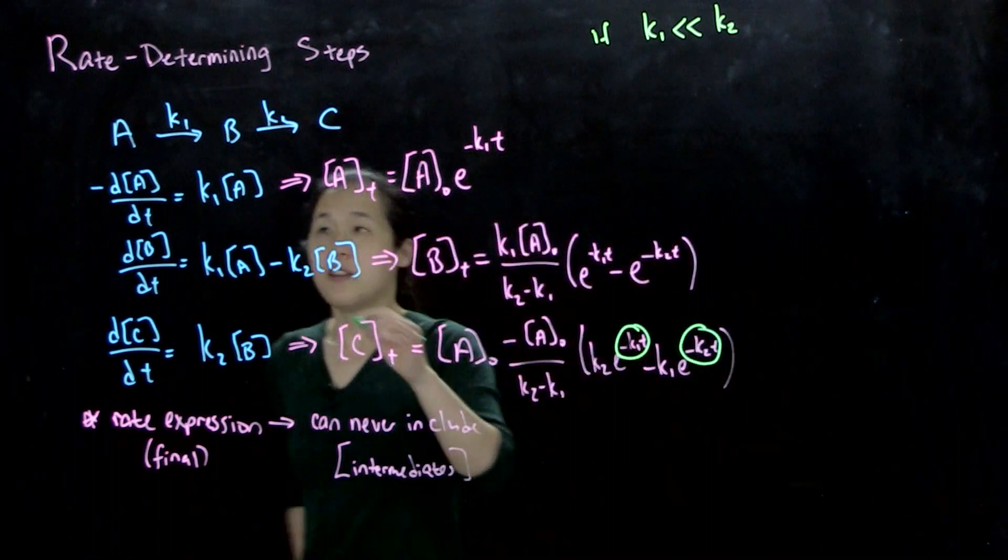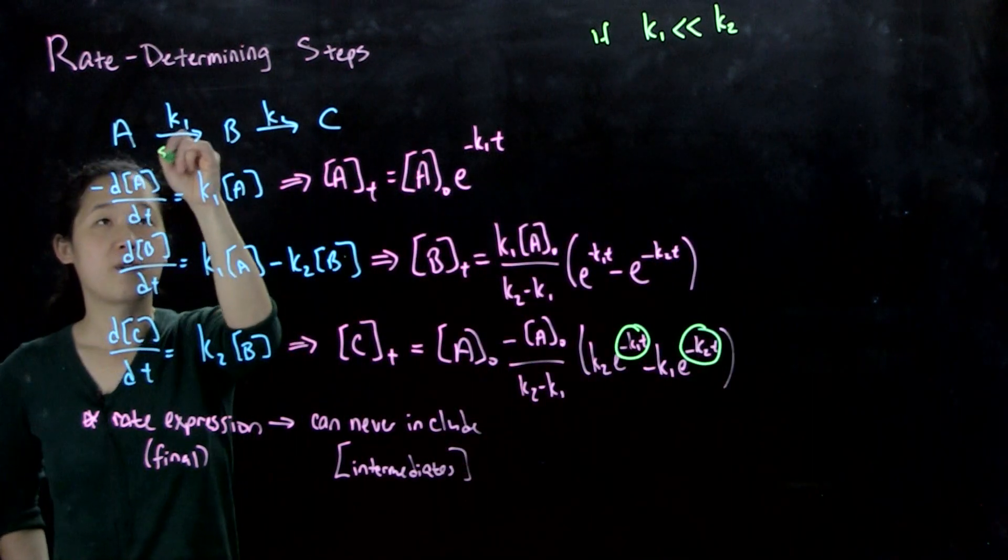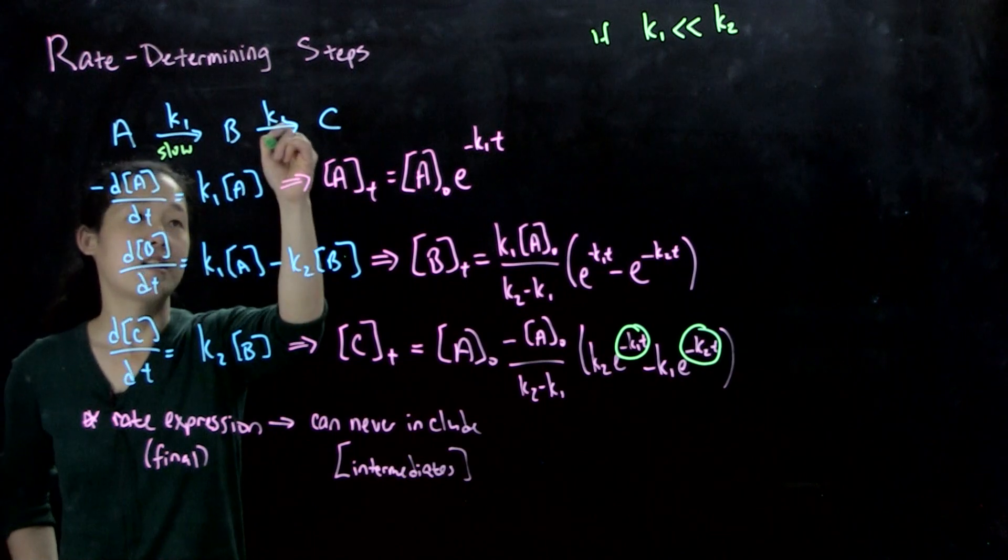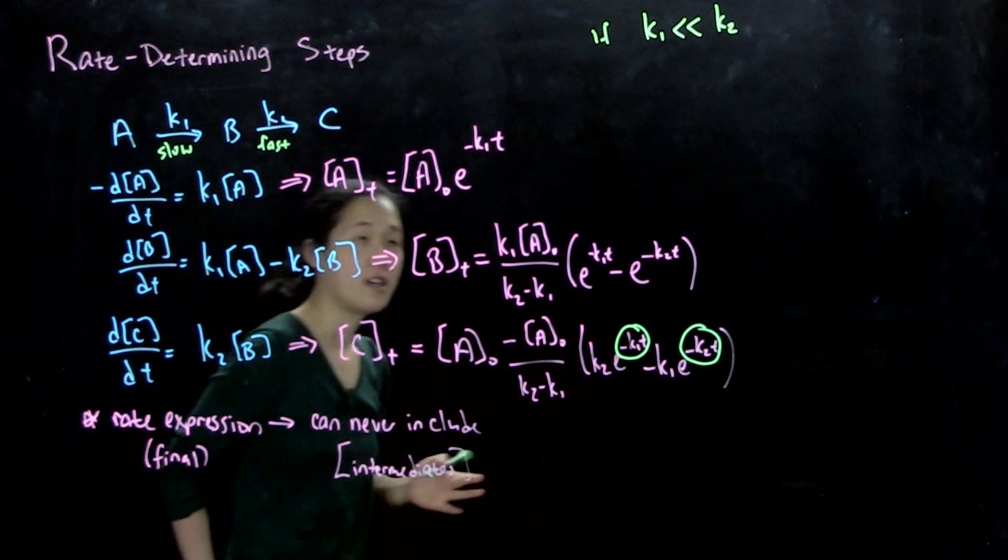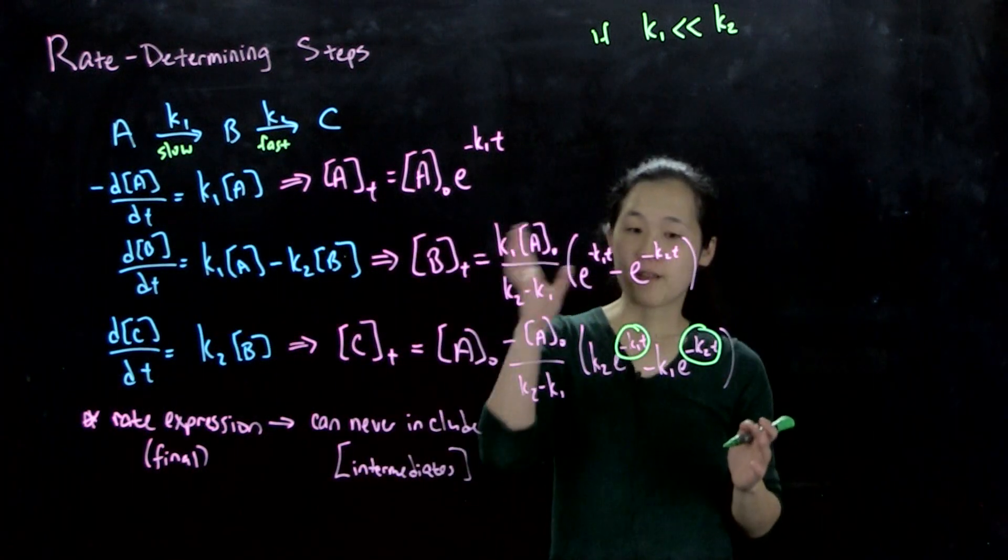So this is in green. So if k1 is very less, then this will be really slow. A to B is slow. And then k2 will be fast. That's what those relative rate constants would mean. So if our slow step is that first step.